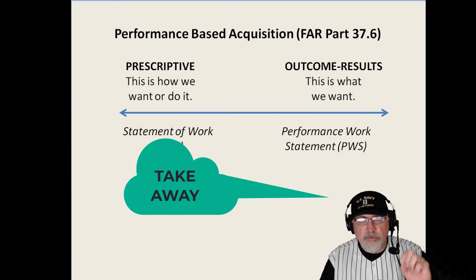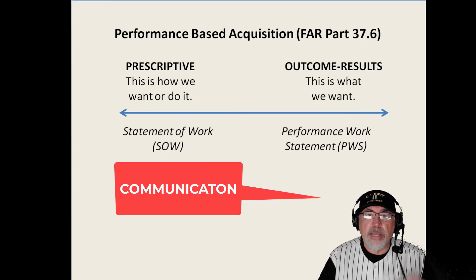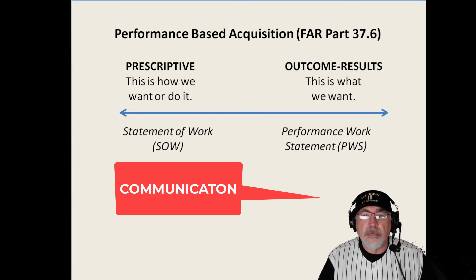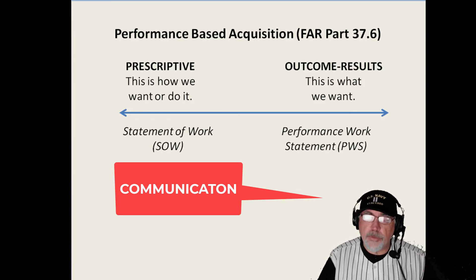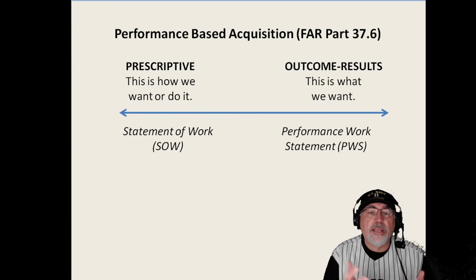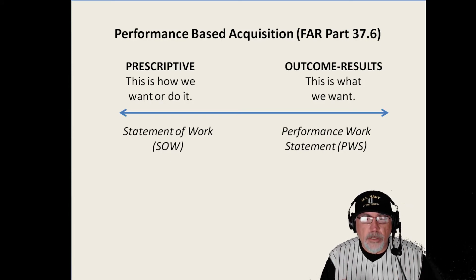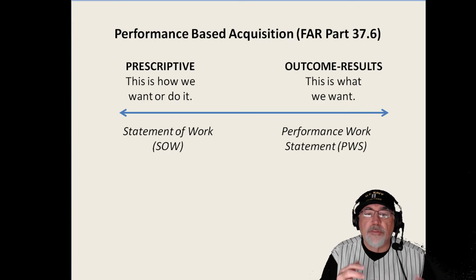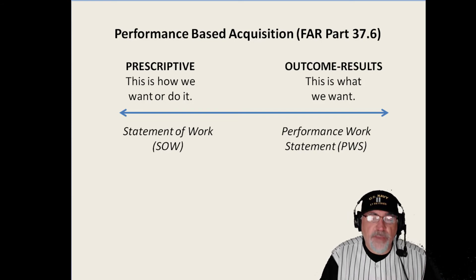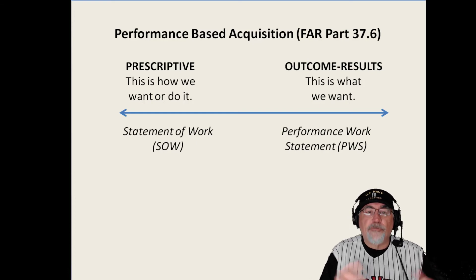Another key takeaway about the performance-based work statement is that it requires more communication. Communication is essential — you need to speak with your contracting officer or the contracting officer's representative about what's happening, where things are going, and any considerations or concerns they need to be aware of. The more you communicate, the better. A performance work statement also demands a different type of oversight from the federal government — they'll have a quality assurance surveillance plan, meaning they'll look at certain things at certain times.